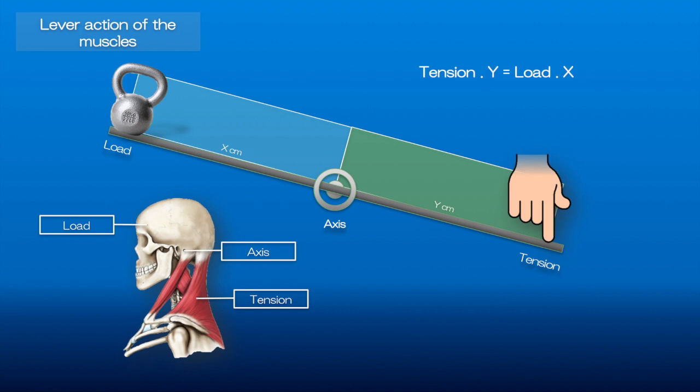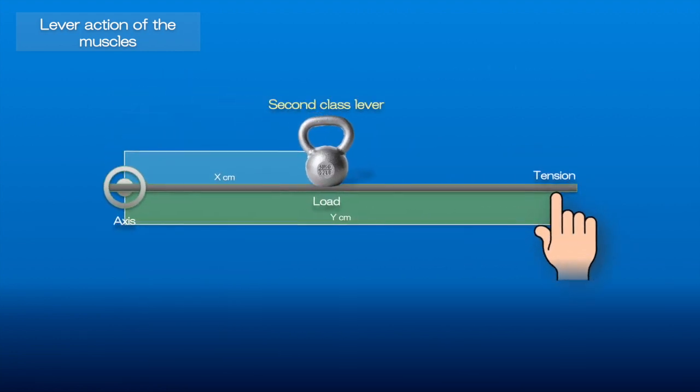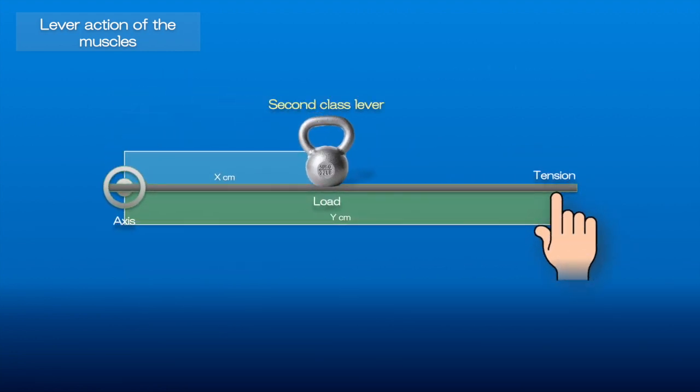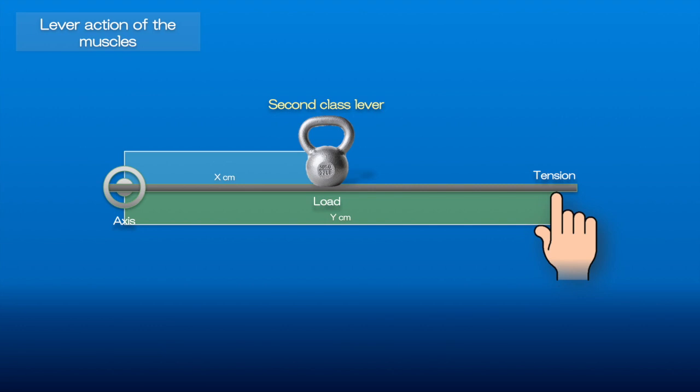In the second class lever, the load is located between the axis and the force. The most obvious example is the wheelbarrow, where the weight is placed on the bed of the wheelbarrow between the wheels, which is the axis here.